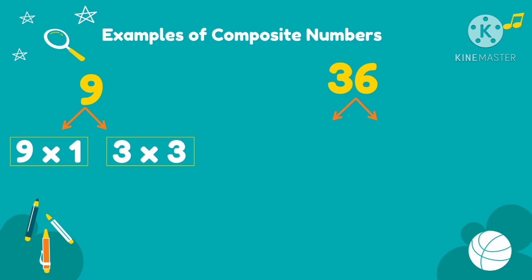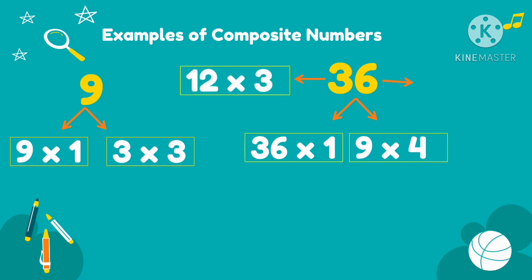So think of a number that when multiplied, the answer is 36. So we have 36 times 1, 9 times 4, 12 times 3, and 6 times 6. So those are the factors of 9 and 36.